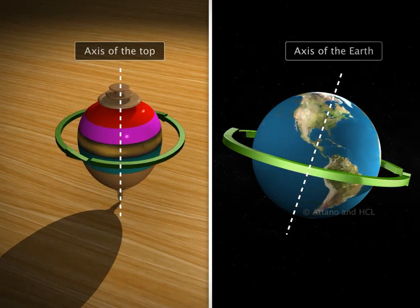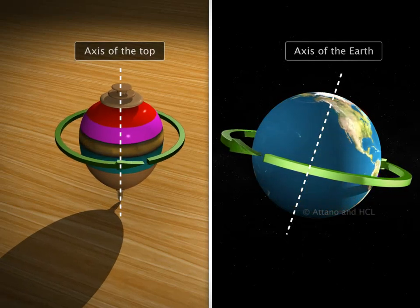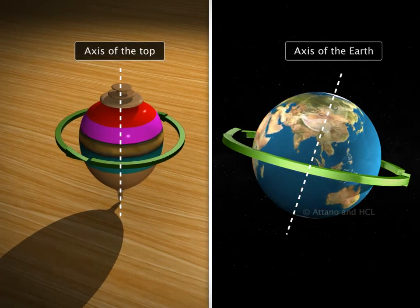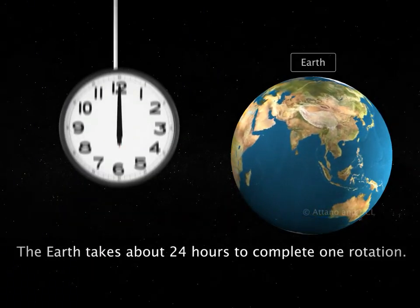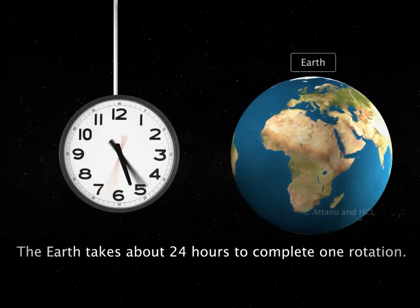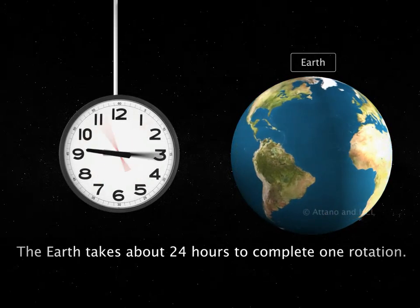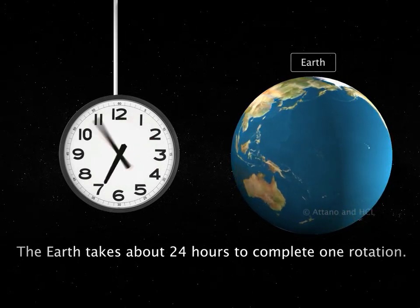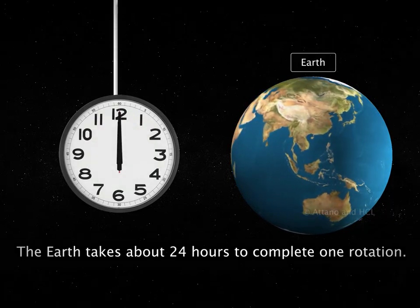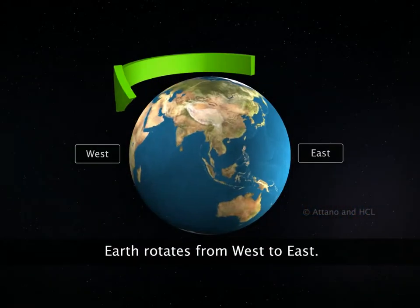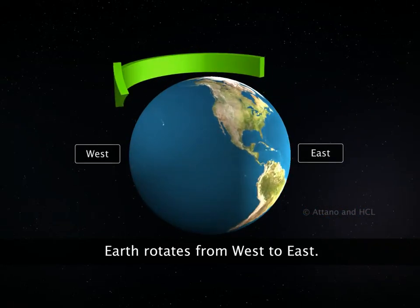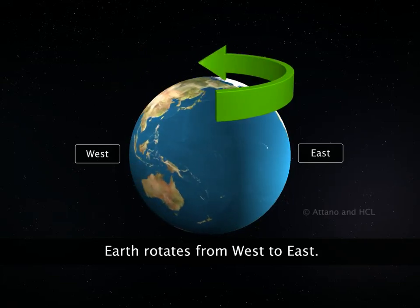The earth spins around an imaginary axis passing from the north to the south. The earth takes about 24 hours to complete one rotation. Unlike a top that can spin in any direction, the earth rotates from west to east only.